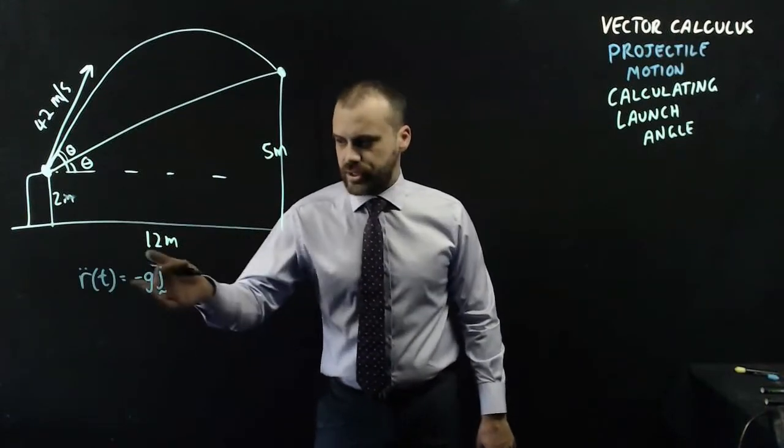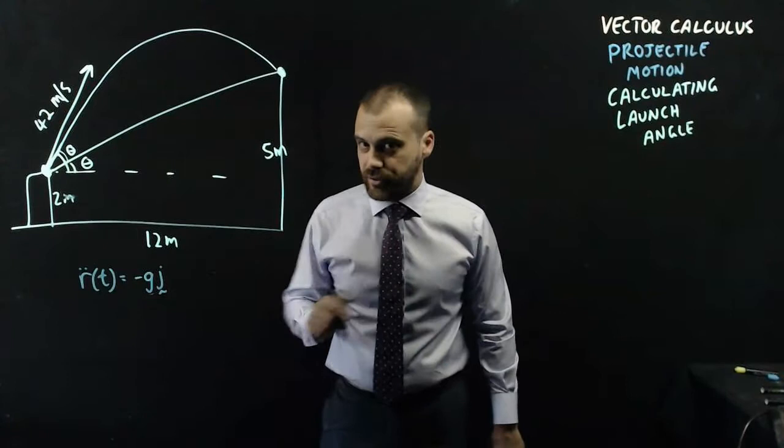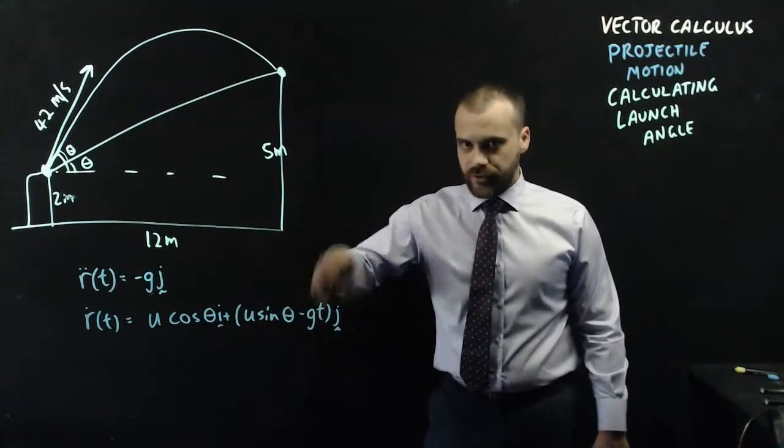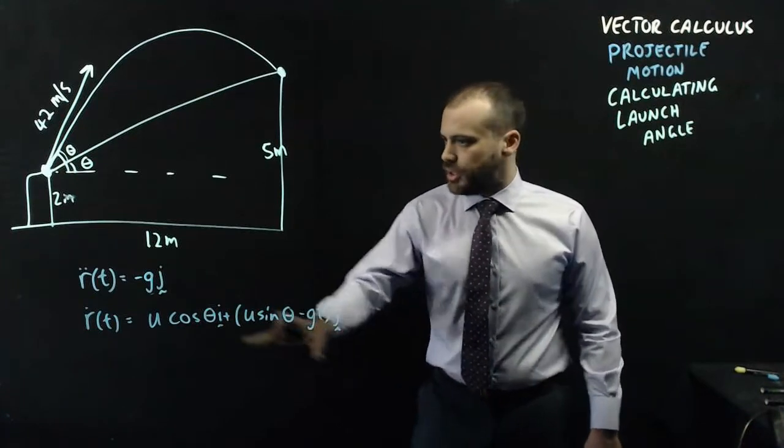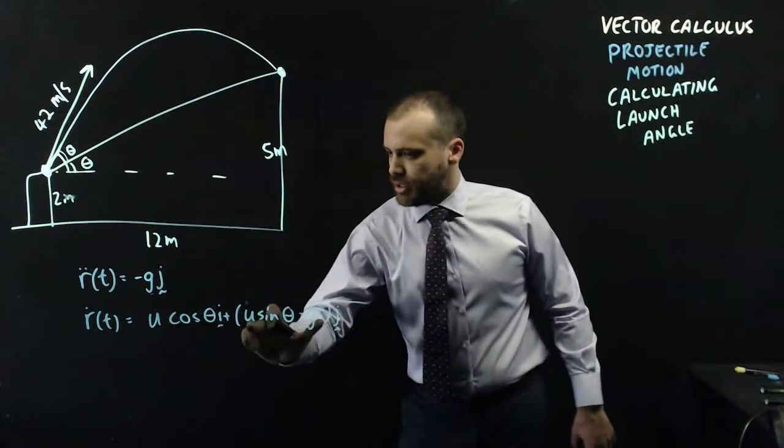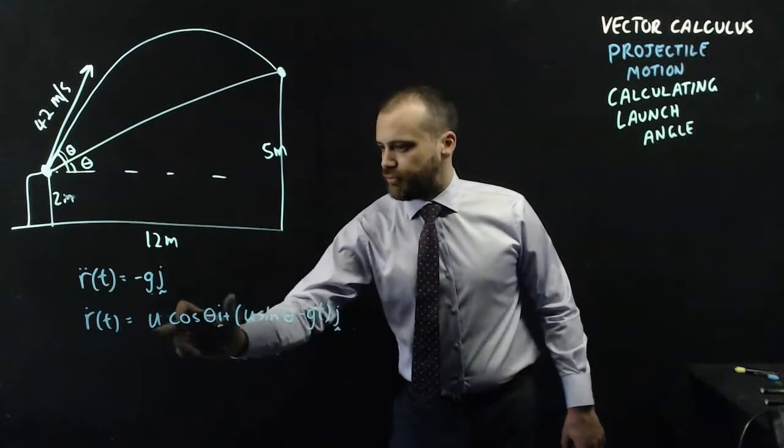Acceleration never changes, it's negative g in the j direction. Now, this is our velocity function for any projectile. Now, if you don't know how to derive that, you probably need to go back and watch another video. But these values here, we know, these are our initial velocities, so that's 42 and 42.